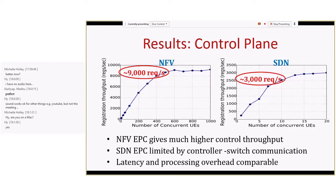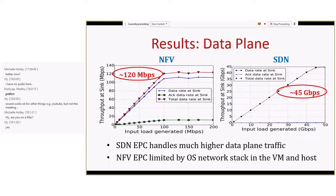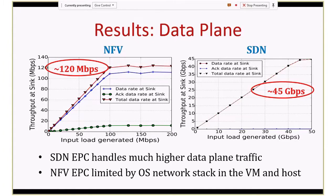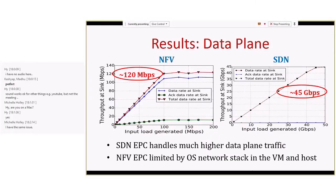For example, when measuring control plane performance for attach and detach operations, we find that the NFV-based version does better because in the SDN version, communication with the centralized controller becomes the bottleneck for control traffic. On the other hand, looking at data plane performance, SDN switches are much better at simply forwarding traffic than the NFV setup, so we get much higher data plane performance in the SDN design.